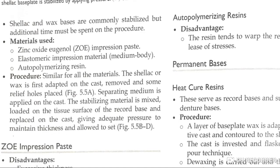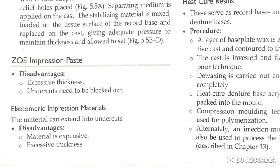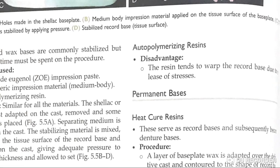The procedure is similar for all materials: the shellac or wax is adapted to the cast, removed, and relief holes placed. Separating medium is applied to the cast. The stabilizing material is mixed and loaded on the tissue surface, replaced in the cast with adequate pressure, maintaining thickness and allowed to set. ZOE impression paste disadvantage includes excessive thickness and undercuts requiring blocking. Elastomeric impression material extends to undercuts but is expensive and may have excessive thickness.